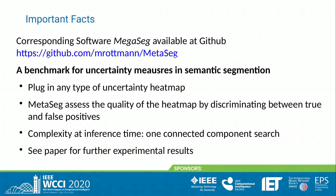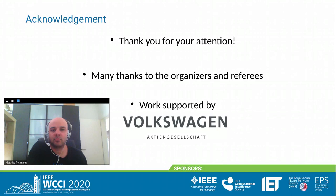To summarize: the software is called MetaSeg, downloadable on GitHub. It also contains a benchmark for uncertainty measures in semantic segmentation — you can plug in any uncertainty heat map and MetaSeg will assess its quality by discriminating between true and false positives. The inference-time complexity is roughly one connected component search. Thank you for your attention, many thanks to the organizers, referees, and sponsors of this online event. This work is supported by Volkswagen, and I look forward to answering your questions.